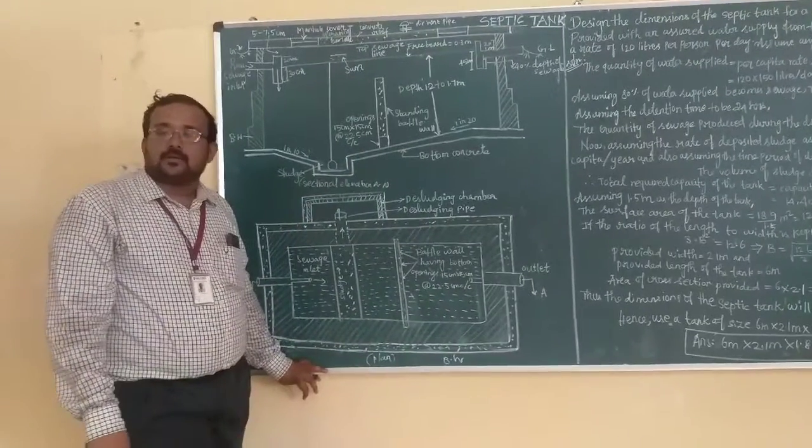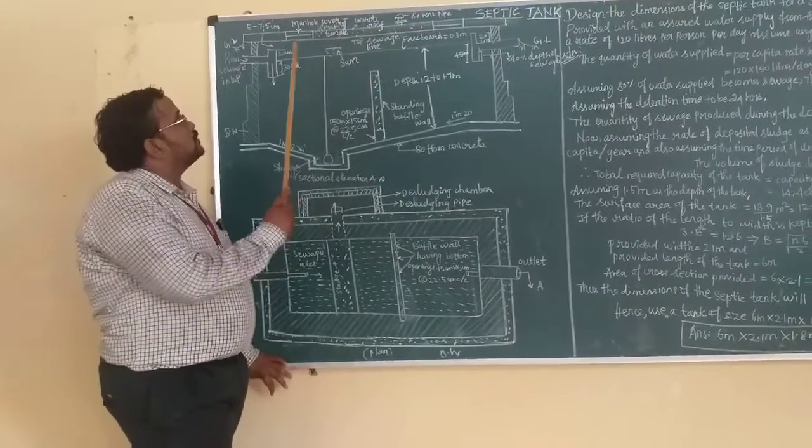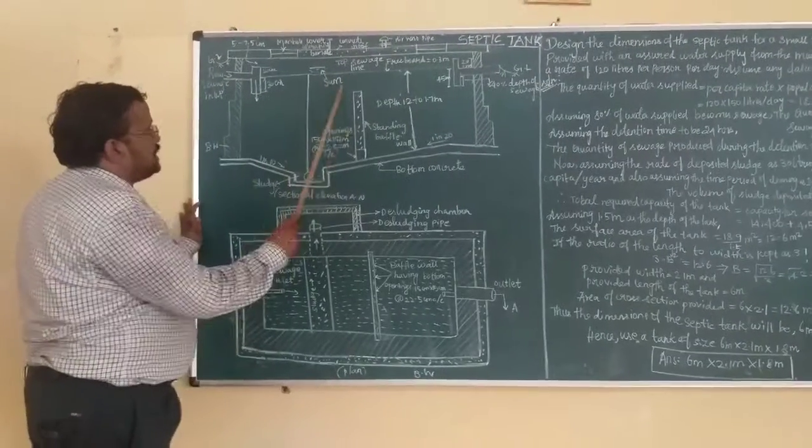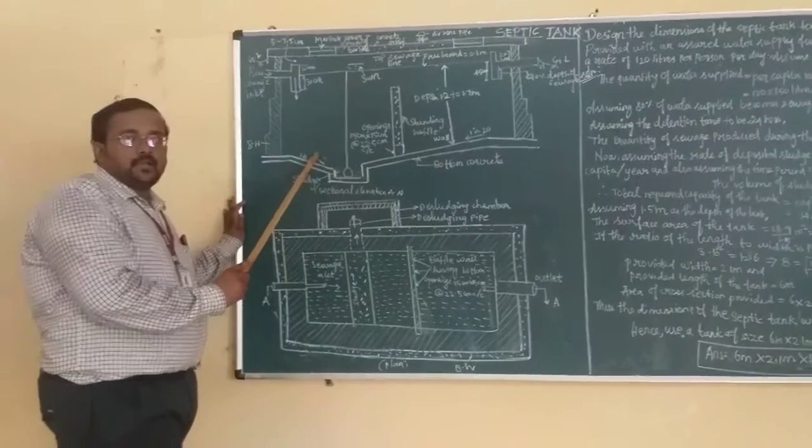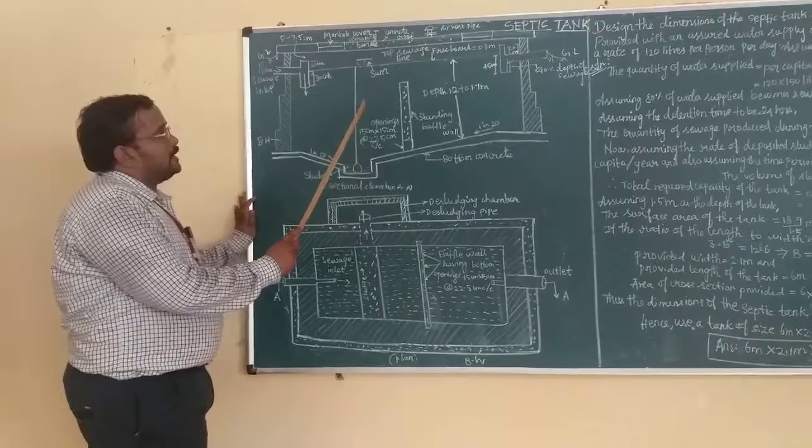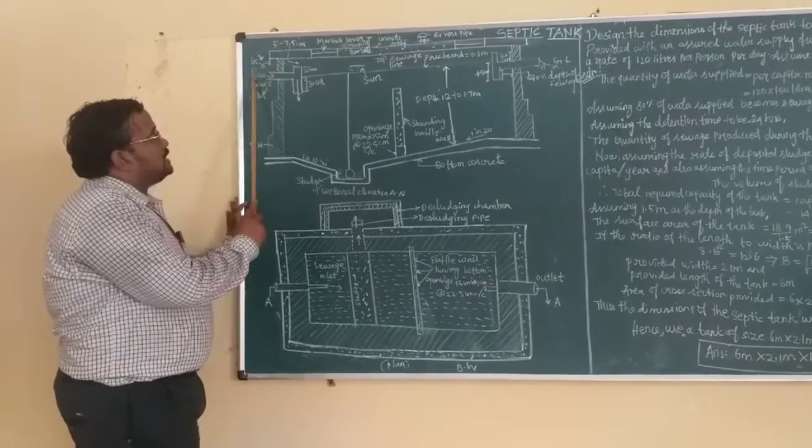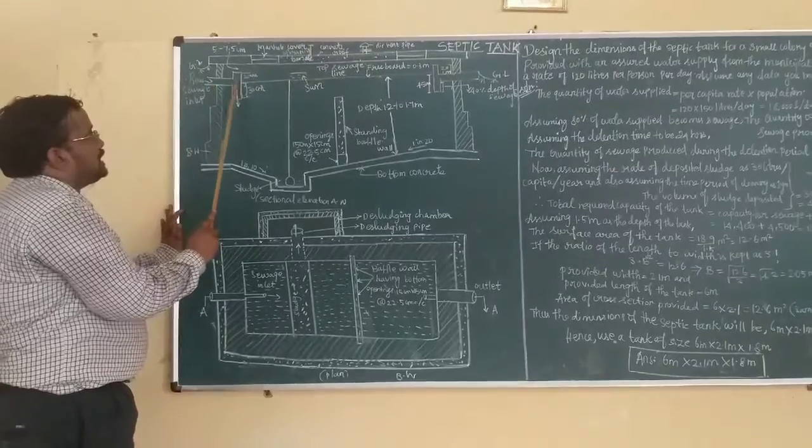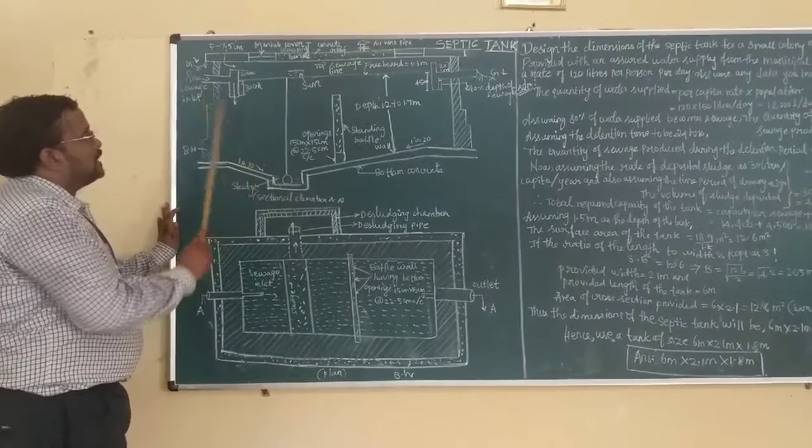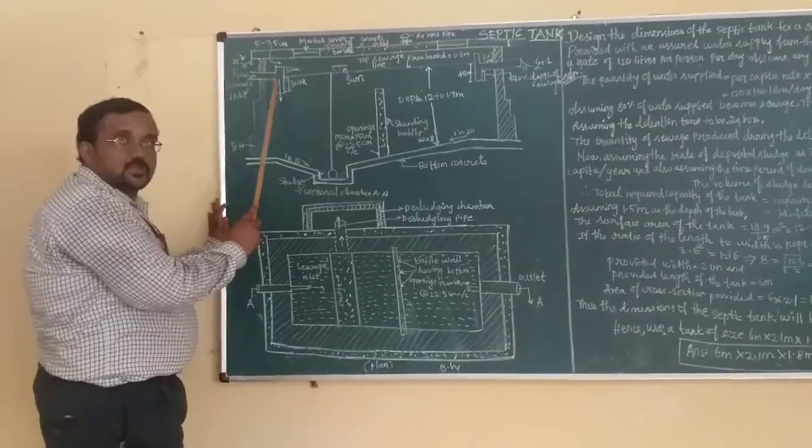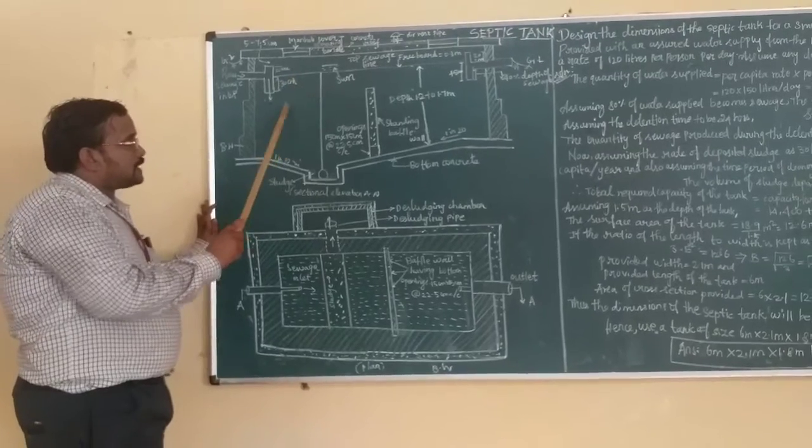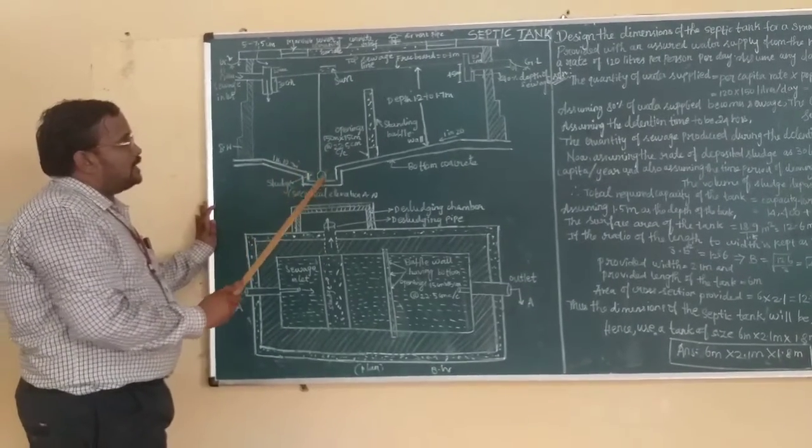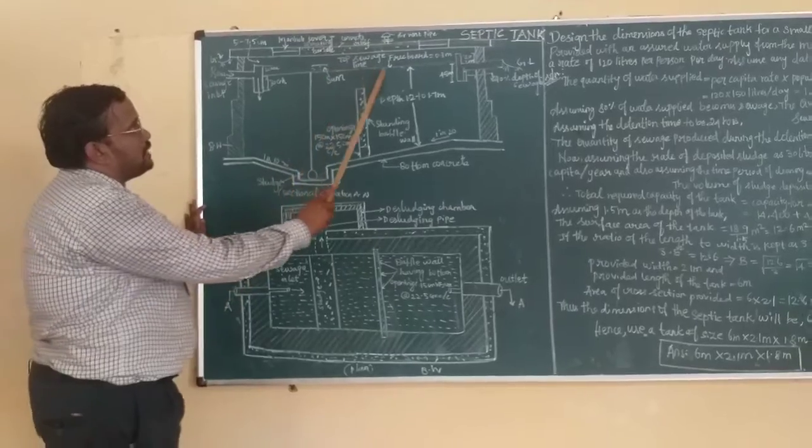As you know, septic tank is a rectangular tank. We will see the various parts one by one. The first chamber is a rectangular chamber. This is the inlet and this is the outlet of the septic tank. Wastewater enters from this inlet side and gets collected in this chamber. In this chamber, sludge forms. The clear supernatant liquid flows like this.